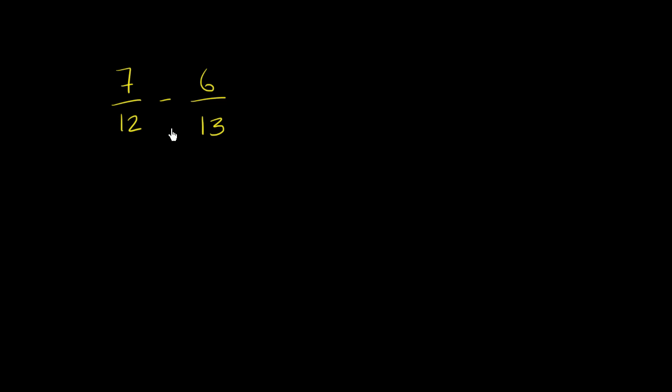Here the denominator is 12. Here it is 13. And the common denominator is going to be the least common multiple of 12 and 13. And 12 and 13 share no common factors other than 1. So their least common multiple is actually just going to be 12 times 13.